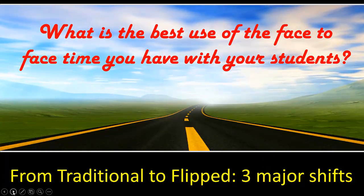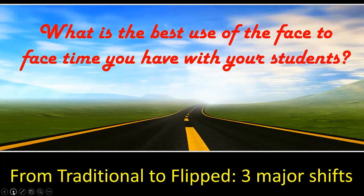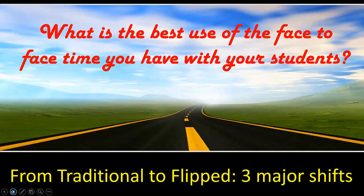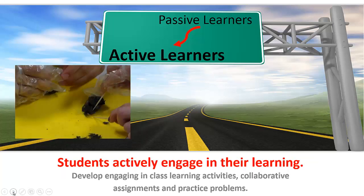There are three major shifts involved when moving from a traditional to a flipped classroom. First, a teacher-centered classroom becomes a student-centered classroom — students are taking more responsibility for their learning. Second, passive learners become active learners; they actively engage in their learning.